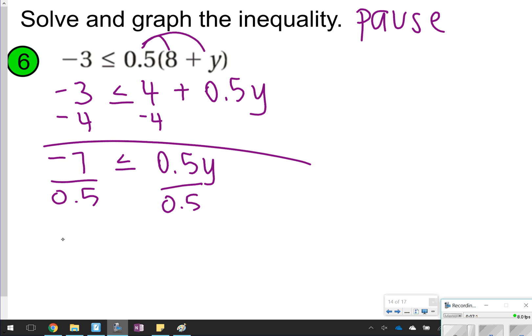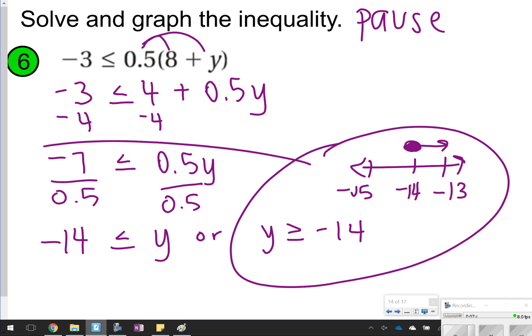So you should have gotten negative 14 is less than or equal to y. But I'd like for you to rewrite that. So that's going to actually look like y is greater than or equal to negative 14. So I've got negative 14 on my number line, negative 13 and negative 15 on either side. I'm going to have a closed circle with the arrow pointing to the 13. So there's your answer for number 6.